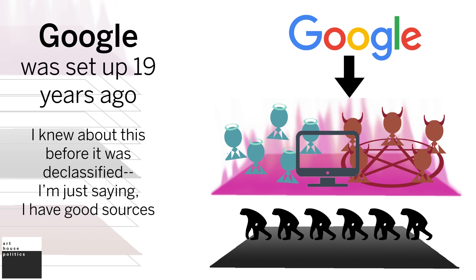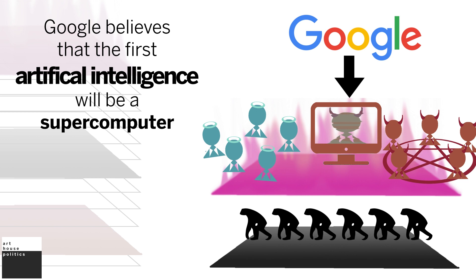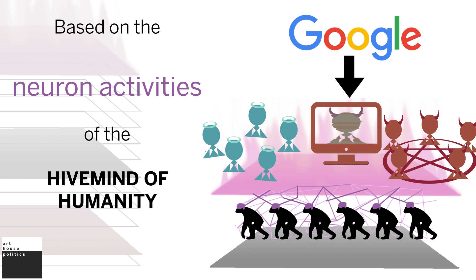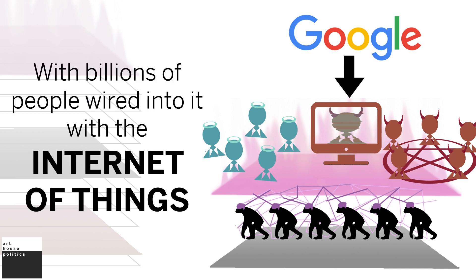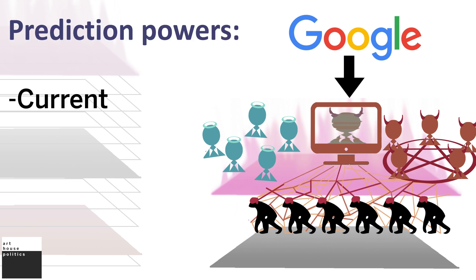Google was set up 19 years ago. I knew about this before it was declassified. I'm just saying I have good sources. They wanted to build a giant artificial system. Google believes that the first artificial intelligence will be a supercomputer based on the neuron activities of the hive mind of humanity with billions of people wired into it with the Internet of Things. And so all of our thoughts go into it so that they will have current prediction powers, future prediction powers, a true crystal ball.